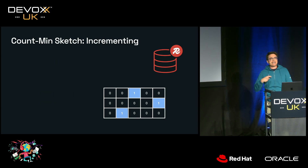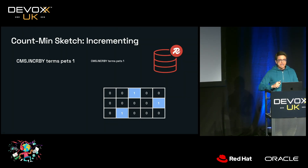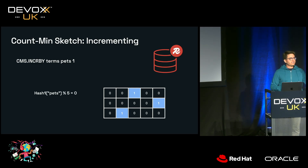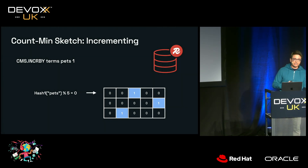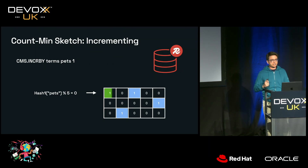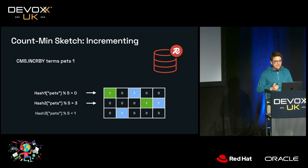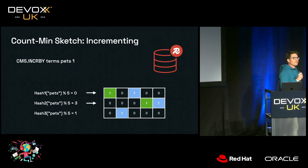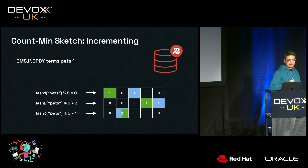Now let's see what happens when we count another element using the CMS — the term 'pets.' Redis runs the same hashing functions, which are deterministic: given a term, they always return the same number. The first hashing function always returns 0 for 'pets,' incrementing column 0 of row 1. For the second, it's column 4 of row 2. For the last, it returned 1 — meaning we had a hash collision with 'Redis,' so we increment column 2 of row 3 again, which had already been incremented by Redis.